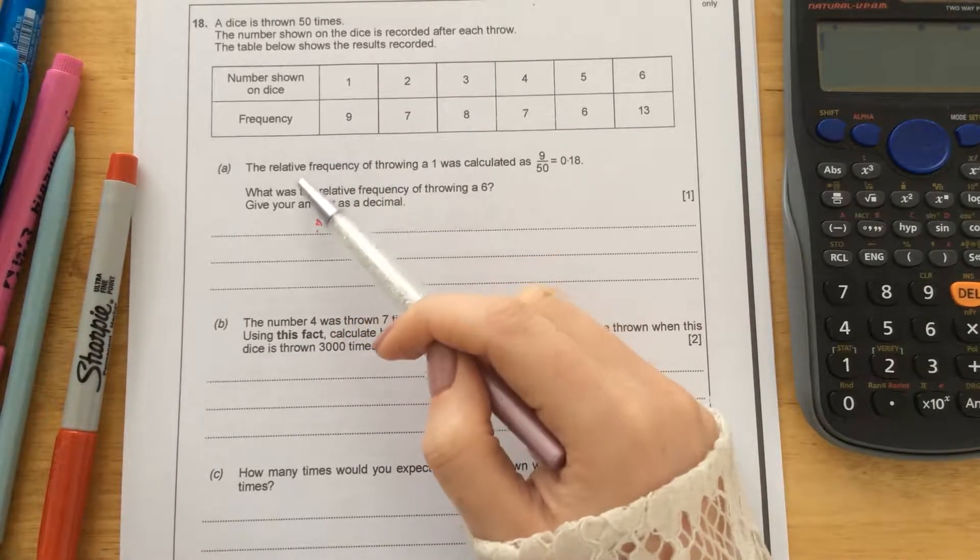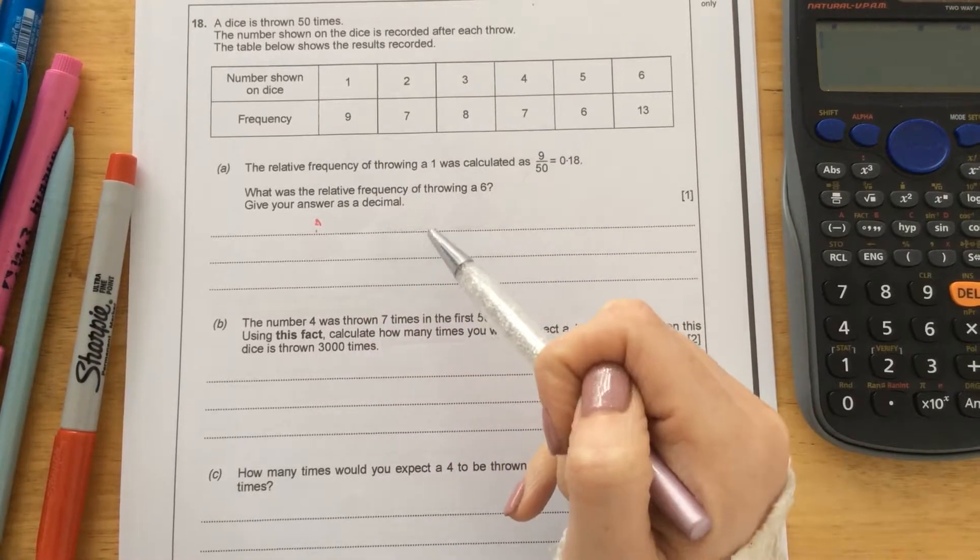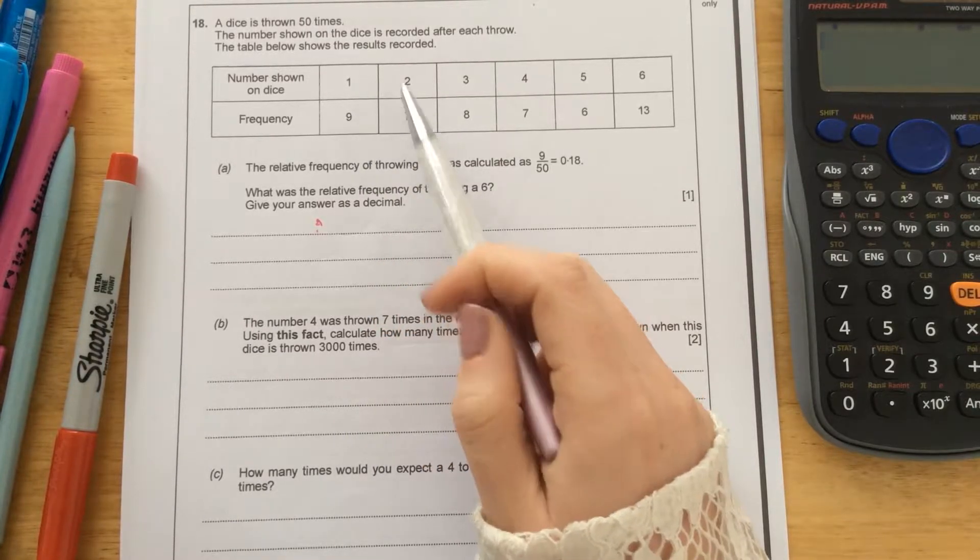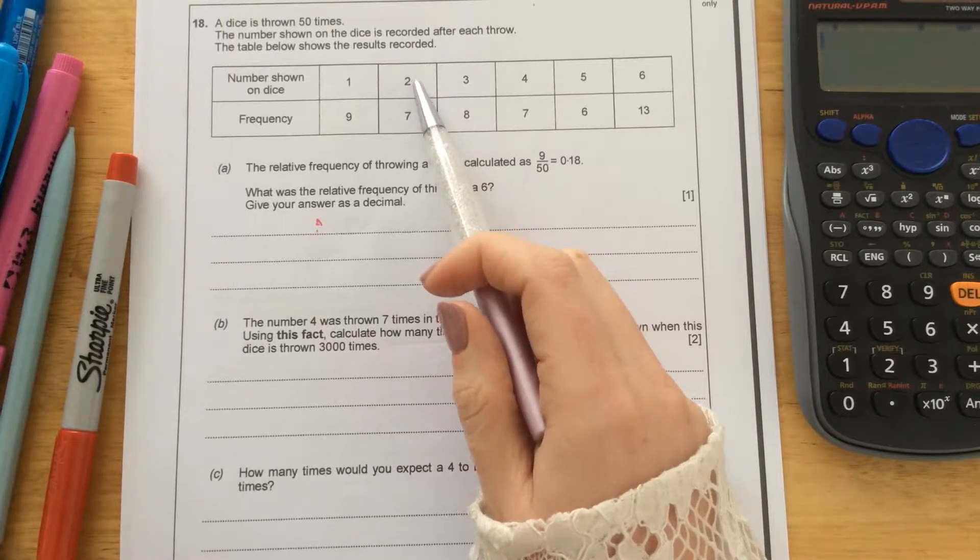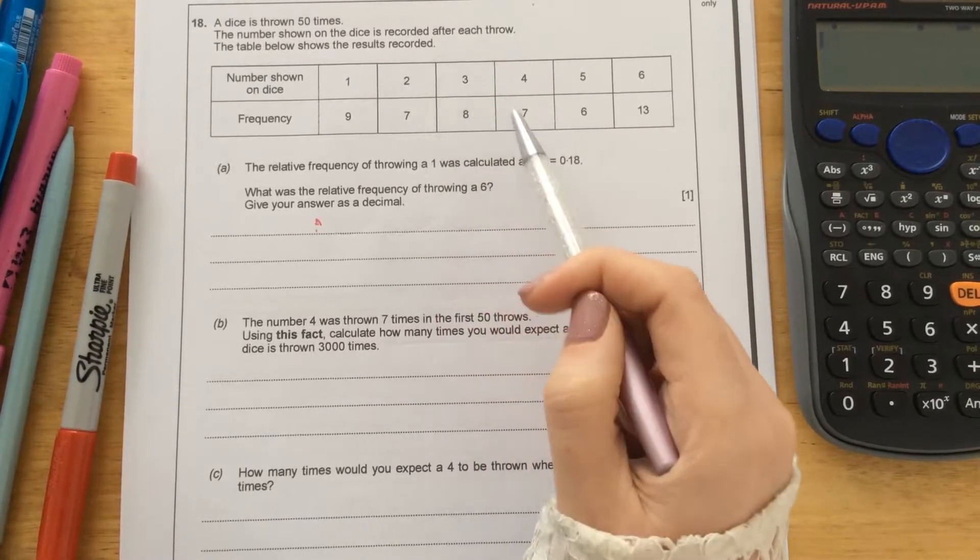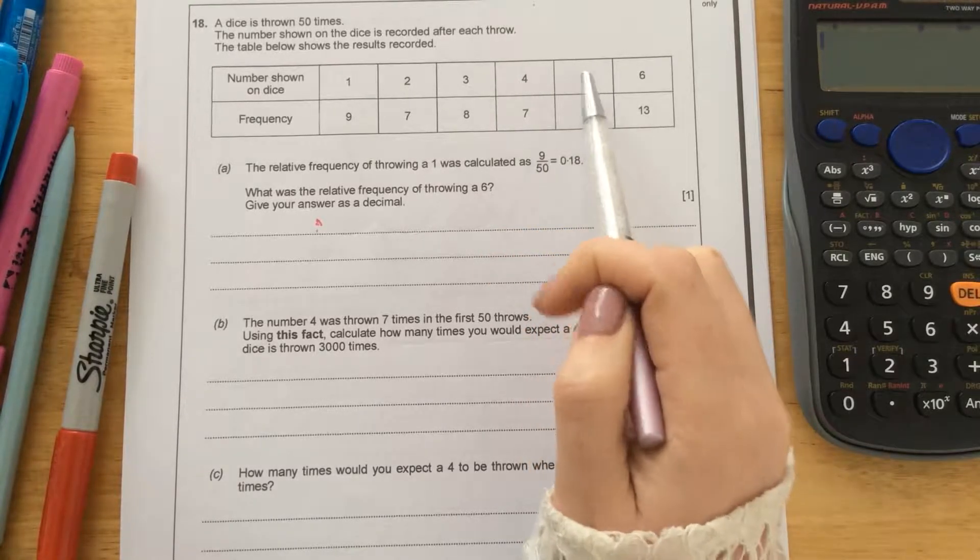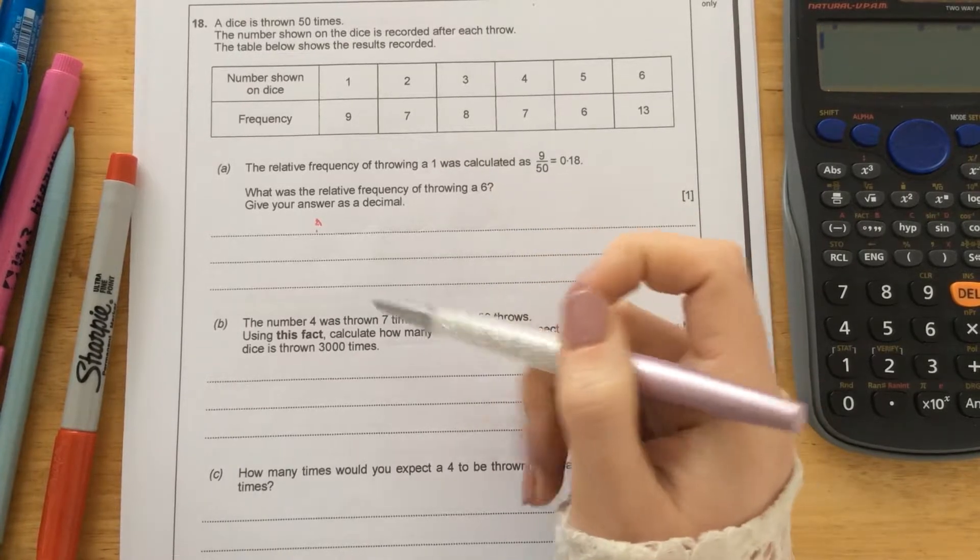So the dice was rolled 50 times, so if we add up all of these, that will give us 50 throws. 9 of those throws, they threw a 1. 7 times a 2 came up. 8 times a 3 came up. 7 times a 4 was rolled. 6 times a 5 was rolled. And the number 6 came up 13 times.